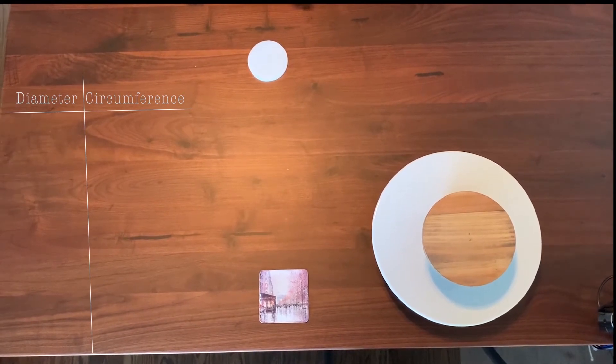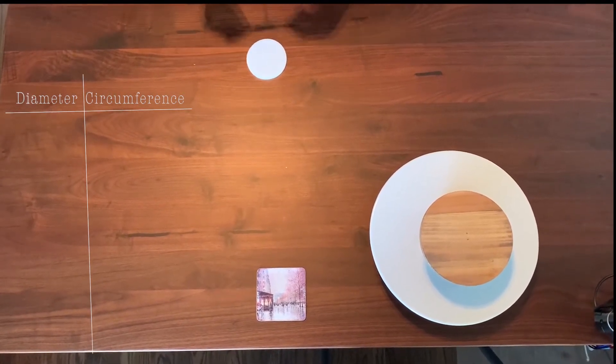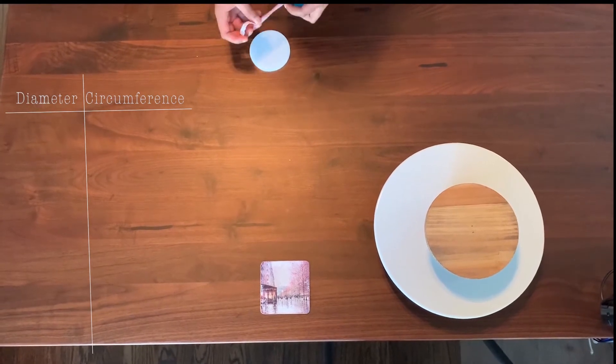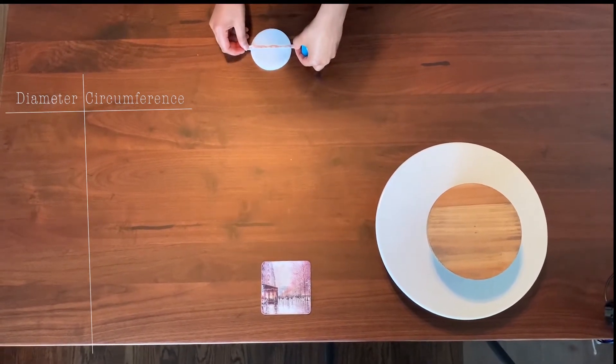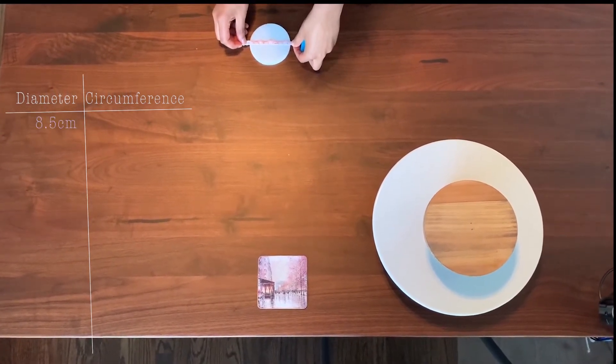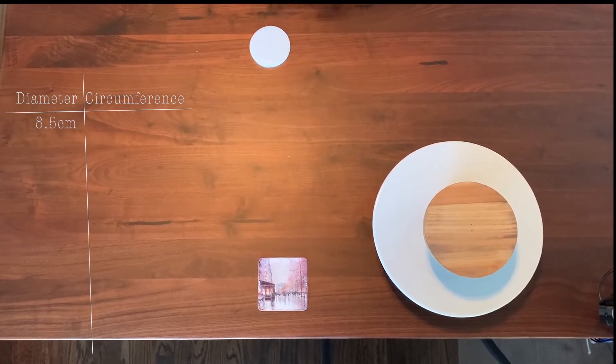So let's find the diameter of this first circle. This is about eight and a half centimeters. So let's add that to that column in our table.